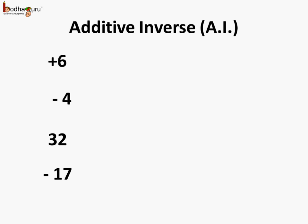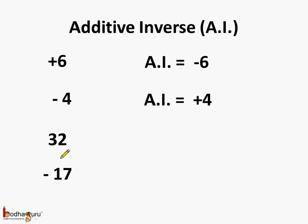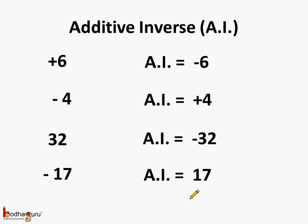Now let us find the additive inverse of these integers. What is the additive inverse of plus 6? It is minus 6, because minus 6 plus 6 is equal to 0. Next, what is the additive inverse of minus 4? It is plus 4, as 4 lies on the right side of 0 and minus 4 lies on the left side, and their sum is equal to 0. Similarly, additive inverse of 32 is equal to minus 32, and additive inverse of minus 17 is equal to plus 17.